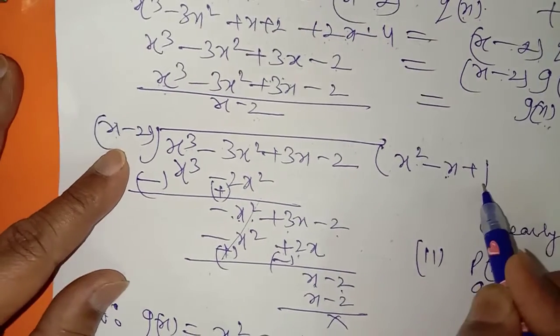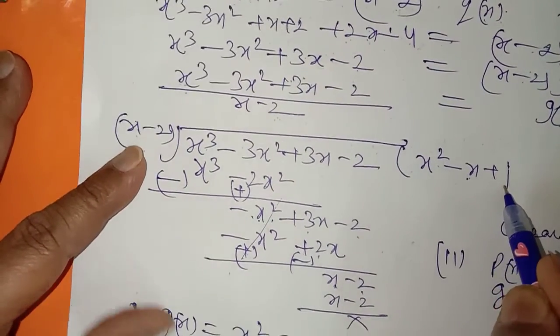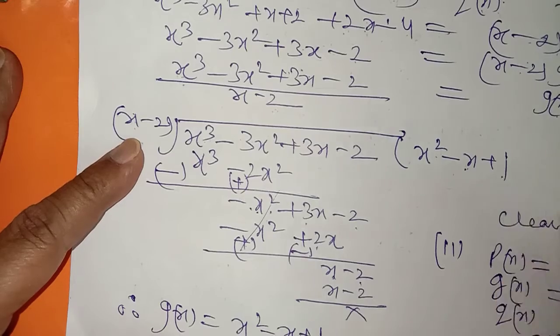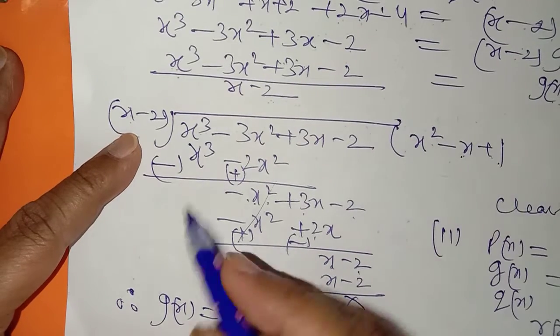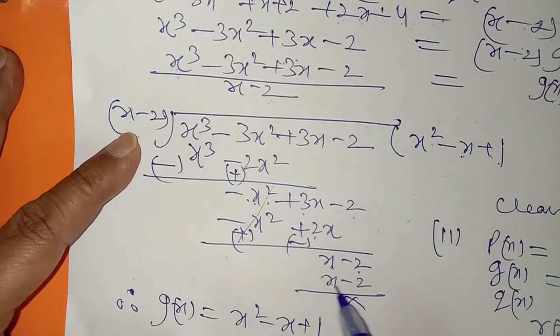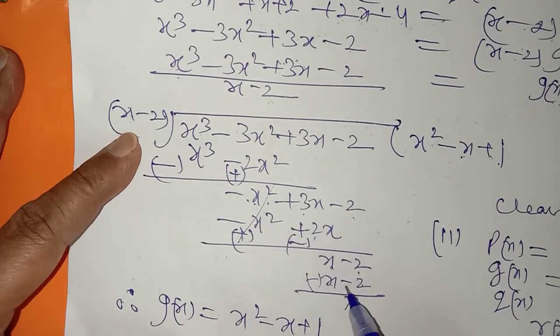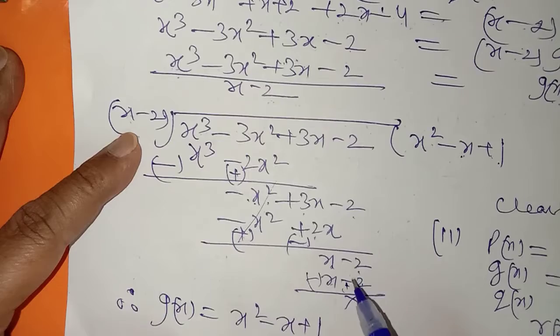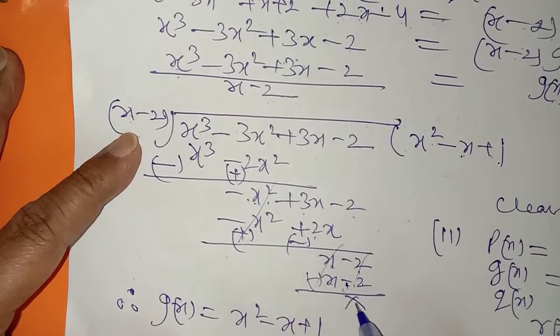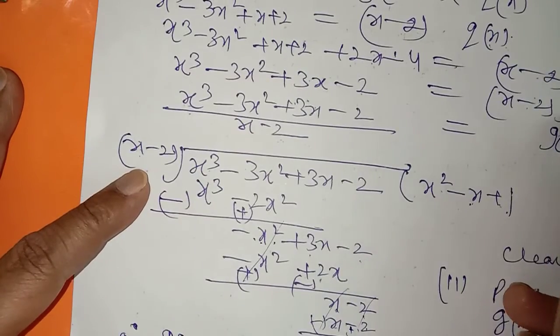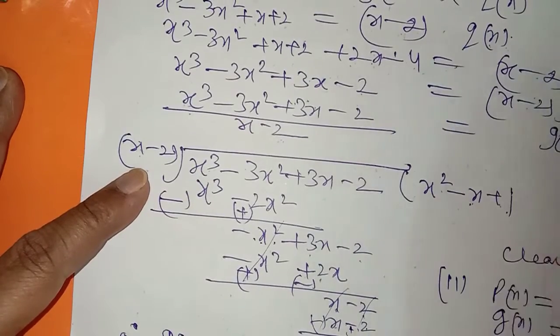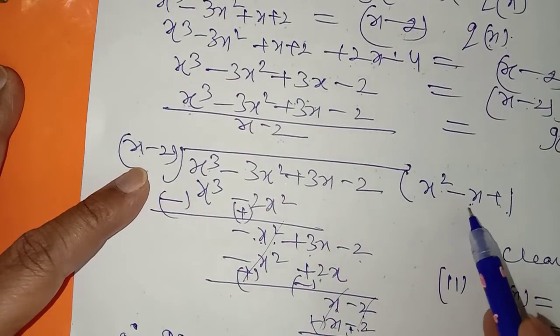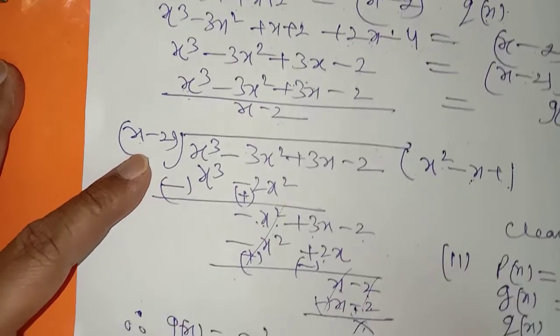You can rewind this video many times to have a good command over it۔ x minus 2، x minus 2 — sign change، remainder 0 ہی آئے گا، کیونکہ جب کہہ رہا ہے کہ یہ اس کا quotient ہے — remainder 0 ہی آئے گا۔